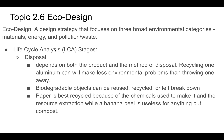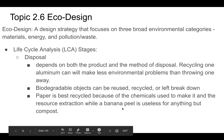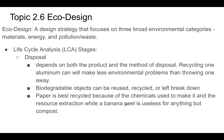Disposal: depending on the product, the method of disposal will have a bigger or smaller environmental impact. Recycling an aluminum can has less environmental impact than throwing one away. Biodegradable objects can be reused, recycled, or left to compost. Paper is best recycled because of the chemicals used to bleach it and separate the wood fibers. A banana peel, on the other hand, can just go to compost — you wouldn't recycle banana peels.